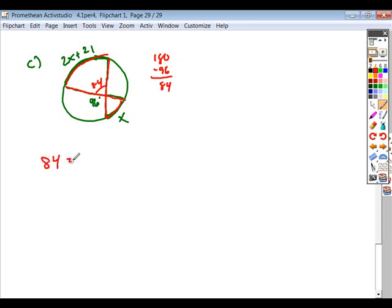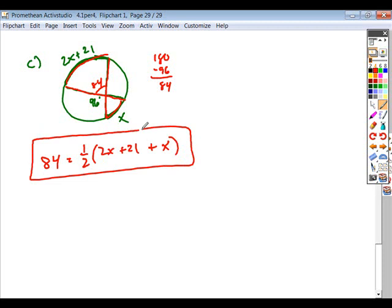So you know that the angle whose vertex lies inside of a circle is equal to the average of the intercepted arcs, or one-half the sum. So if we take 2x plus 21 and we add that to x, we'll now get our solution. So again, if you solve this equation for x, that will be your answer. Again, I'm not going to go through the calculation. I figure you can do that one on your own.